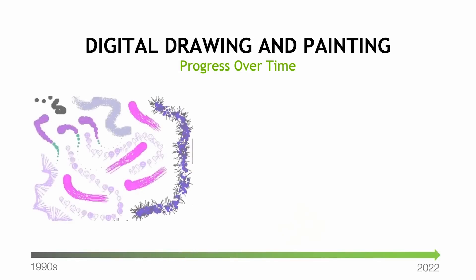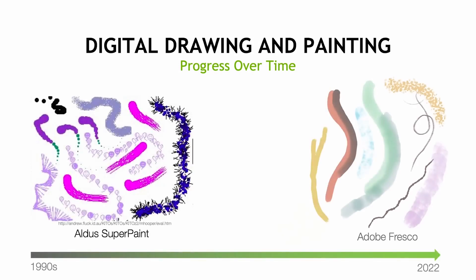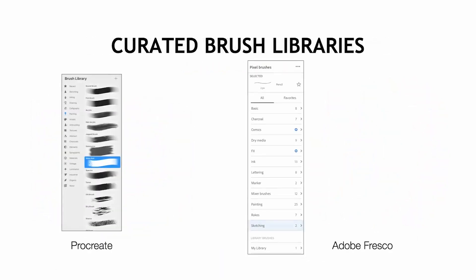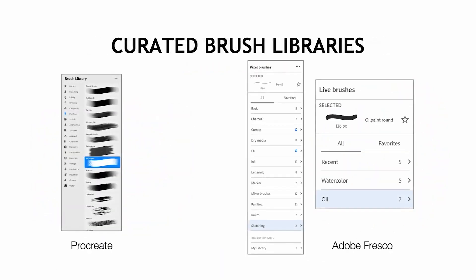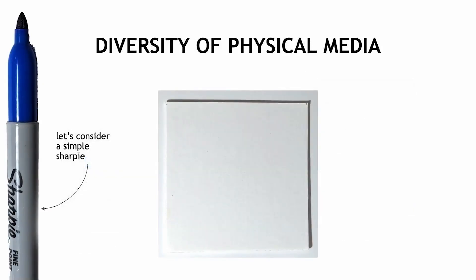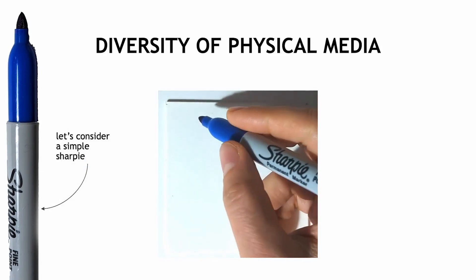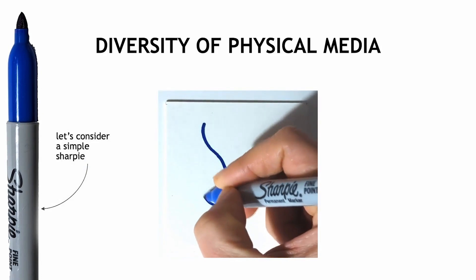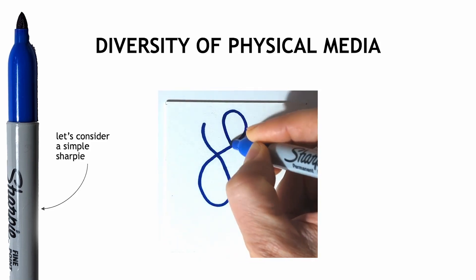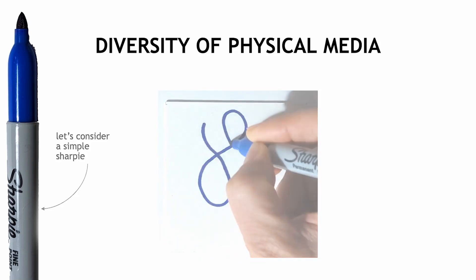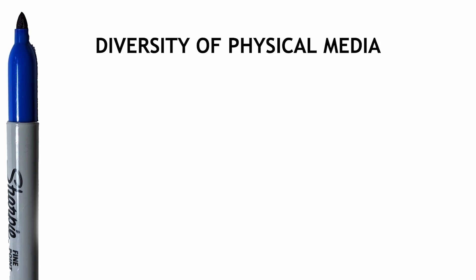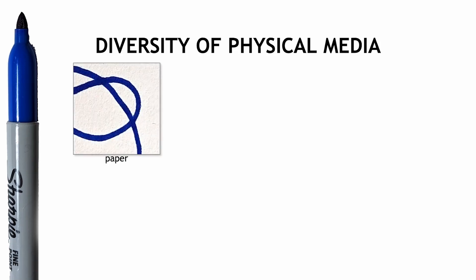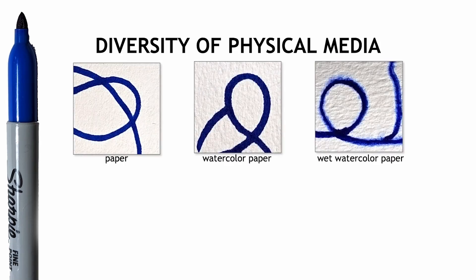Digital drawing media has made remarkable progress over the years. Typically, digital brushes are presented as curated lists of tools. But are these tools actually sufficient to match the diversity of physical media? Let us consider this simple Sharpie brush. One would think it would be sufficient to have a single digital tool replicate its appearance. However, even this modest marker boasts a wide variety of looks when drawn on different paper.